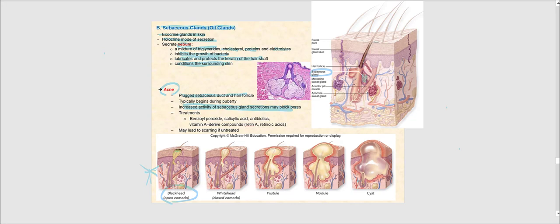If there's a little bit of the stratum corneum that covers up the plugged hair follicle, we end up with what is called a whitehead or a closed comedo. A pustule is a little more serious than a blackhead and a whitehead.